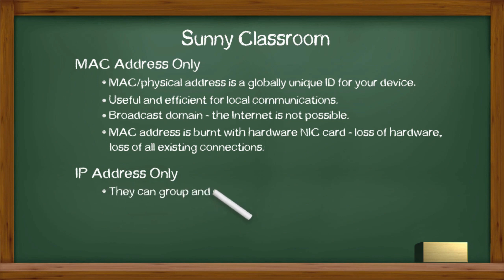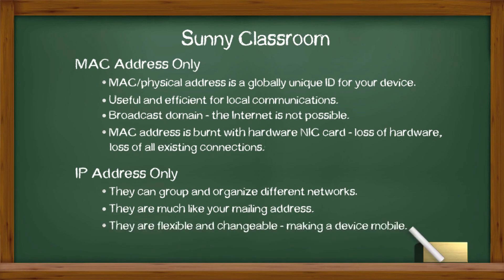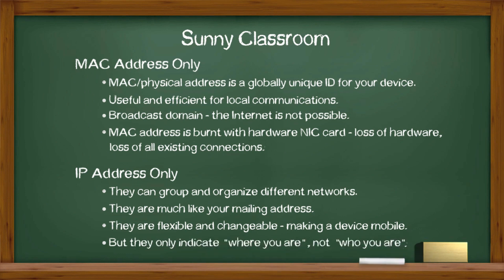IP address, on the other hand, is flexible and IP addressing can group and organize different networks. The IP address is very much like your mailing address — it tells where to find you. One great advantage of IP address is that it can change, which allows your computer to be mobile. If you move your computer to a different network, your IP address changes, just like your mailing address can change whenever you move to a new place. But they only indicate where you are, not who you are.